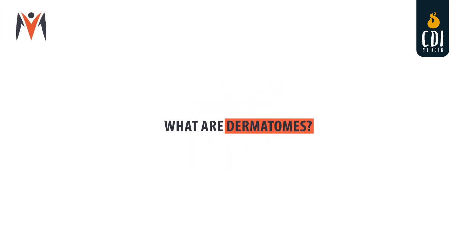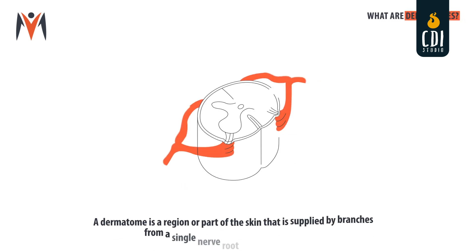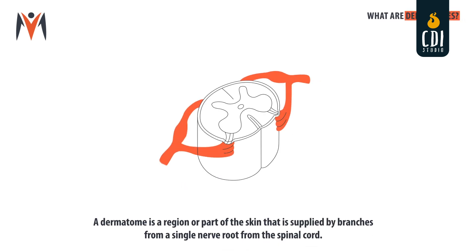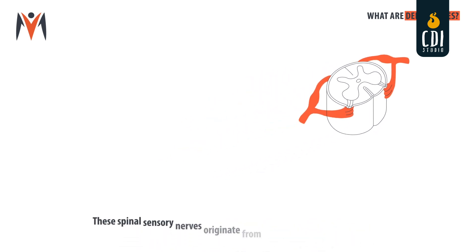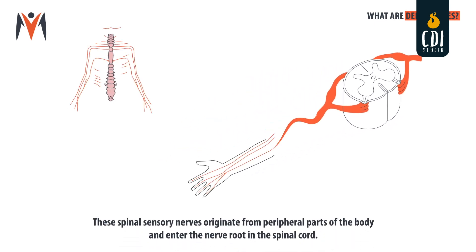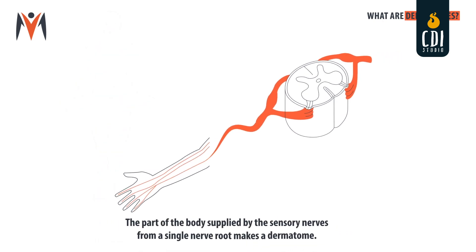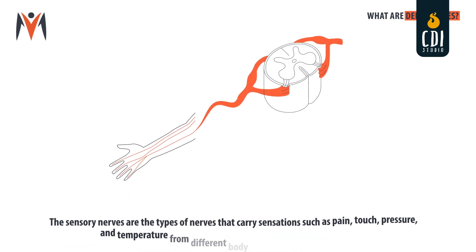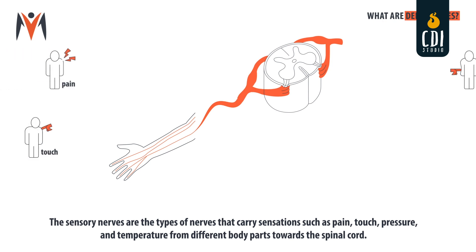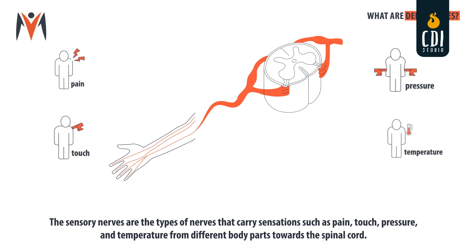What are dermatomes? A dermatome is a region or part of the skin that is supplied by branches from a single nerve root from the spinal cord. These spinal sensory nerves originate from peripheral parts of the body and enter the nerve root in the spinal cord. The part of the body supplied by the sensory nerves from a single nerve root makes a dermatome. The sensory nerves carry sensations such as pain, touch, pressure, and temperature from different body parts towards the spinal cord.